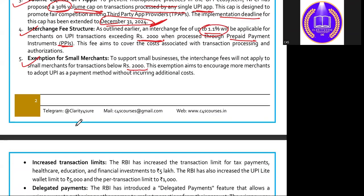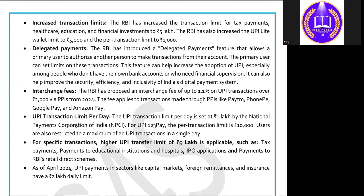Other updates: RBI has increased the UPI transaction limit to 5 lakhs for tax payment, health, education, and financial investments. RBI has also increased the UPI Light wallet limit to 5,000. The delegated payment system introduced by RBI allows the primary user to authorize another person to make transactions from their account, and the primary user can set limits on these transactions. This feature can help increase UPI adoption, especially for people who don't have their own bank accounts or who need financial supervision or lack financial literacy.